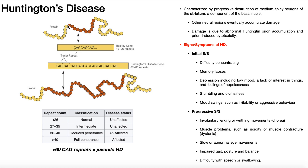If we look at the protein structure right here, in the middle you have these brown circles. These ones are all glutamine, and each glutamine residue is encoded by the nucleotide sequence CAG. So in the DNA sequence, you have CAG, CAG, CAG, and so on and so forth. There's a bunch of what we call these triplet repeats of CAG. A healthy Huntingtin protein will have anywhere between 10 and 26 repeats of CAG, meaning there would be between 10 and 26 glutamine residues in a row in the middle of the protein.